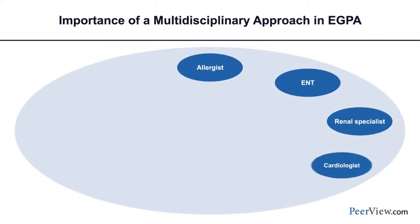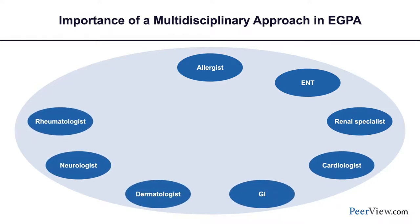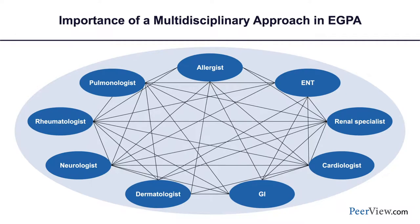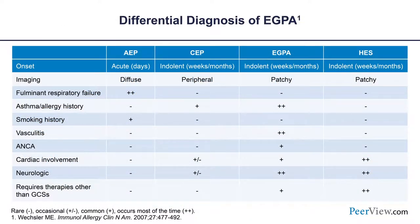Hematologists and infectious disease specialists may see it because of eosinophilia, dermatologists because of the rash, cardiologists because of myocardial involvement, and gastroenterologists and nephrologists because of effects on those organ systems. It's really important for different treating specialists to work together to establish a diagnosis and identify an appropriate treatment plan. Some differential diagnoses to consider include other vasculitides, chronic eosinophilic pneumonia, and hypereosinophilic syndromes. Eosinophilia is essential for a diagnosis of eGPA, along with asthma and some degree of extra-pulmonary involvement. ANCA testing, CT imaging, and electromyography can also be helpful.